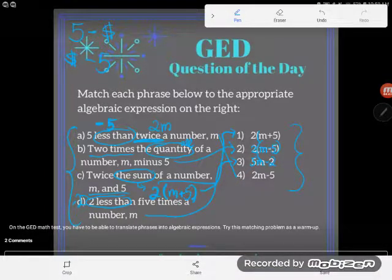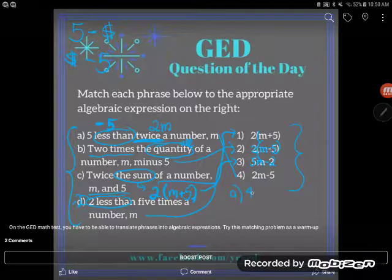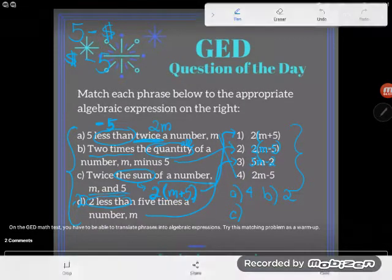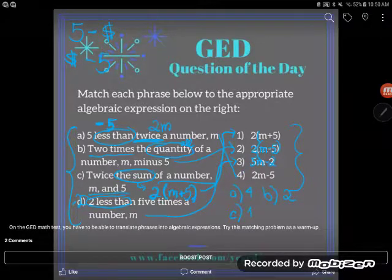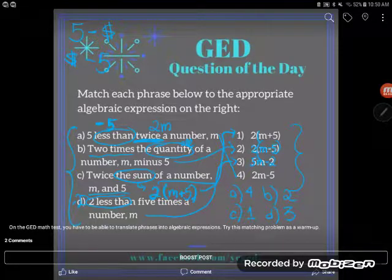So let's just write out our answers here so we're clear. A matches with four. B matches with two. C matches with, oh I can't even read my own handwriting. Oh yeah, it was one. And D does indeed match with three. Great.